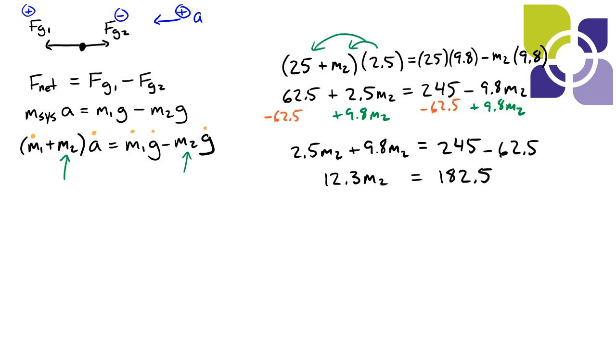And now we're simply one step away from solving this by dividing each side by 12.3 we isolate m2 so we get m2 is equal to 182.5 divided by 12.3 around that 2 14.8 kilograms.